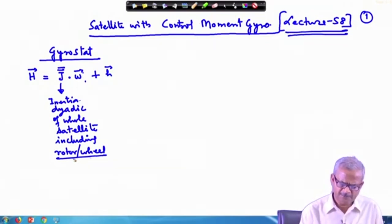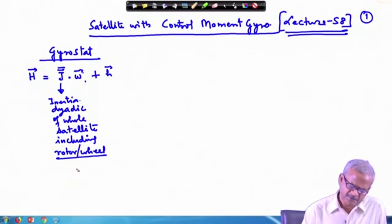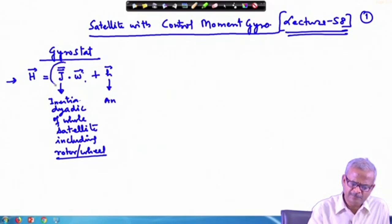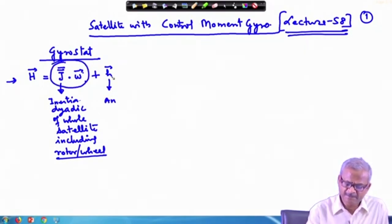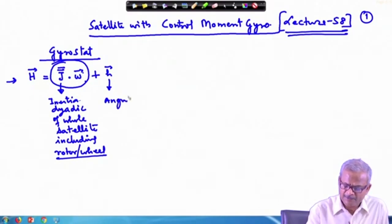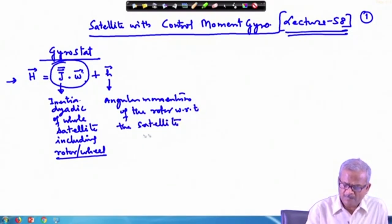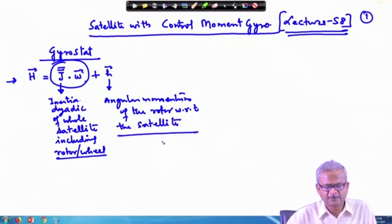This inertia dyadic is for the whole satellite — including the reaction wheel and the rotor, which are momentum storage or momentum transfer devices. We will discuss that distinction later. So this relationship we have derived gives the angular momentum of the whole satellite, and h is the angular momentum of the rotor with respect to the satellite, giving the total angular momentum.